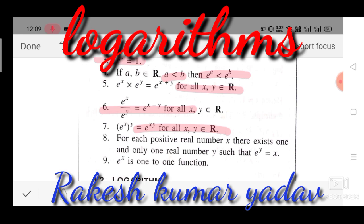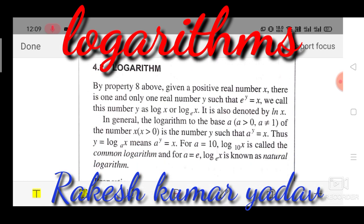Eighth property: for each positive real number x, there exists one and only one real number y such that e^y equals x. Ninth property: e^x is a one-one function. When you study functions, you should know they are of two types — one-one and onto — and e^x is a one-one function.